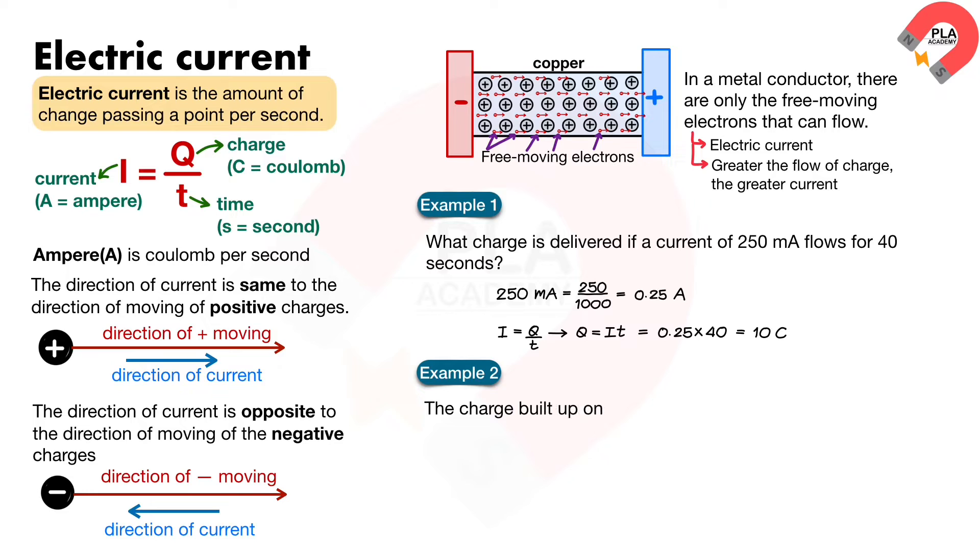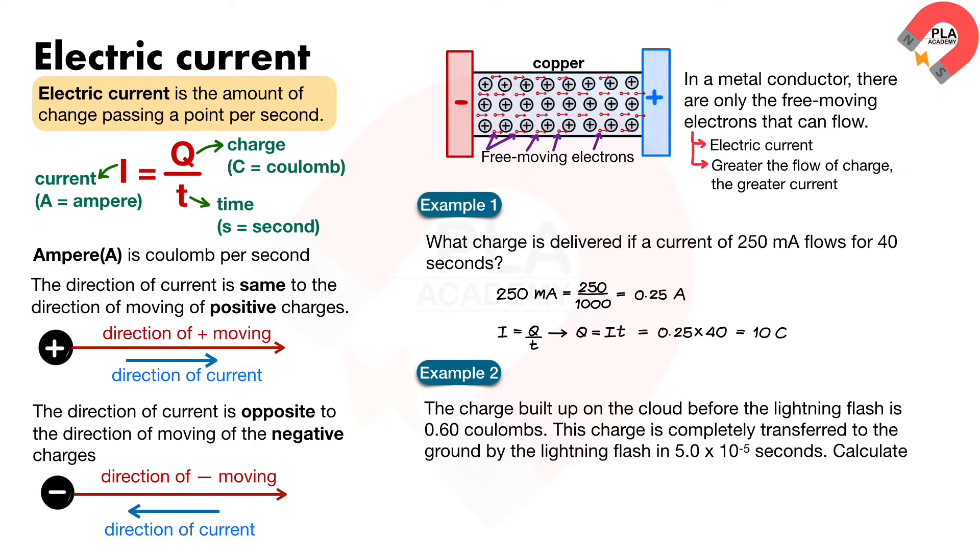Example 2: The charge built up on the cloud before the lightning flash is 0.60 coulombs. This charge is completely transferred to the ground by the lightning flash in 5.0 times 10 to the power of minus 5 seconds. Calculate the current between the cloud and the ground.